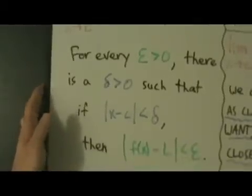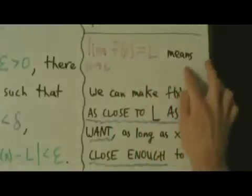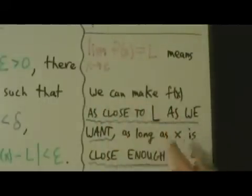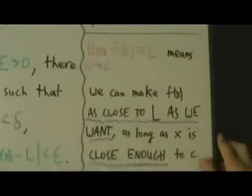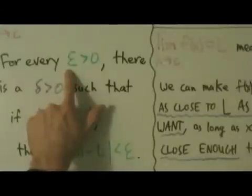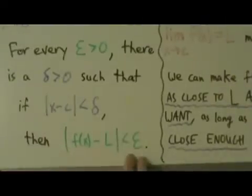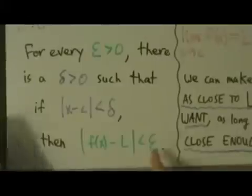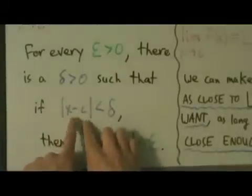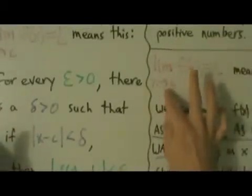So what does this definition kind of mean? Let's think about this a slightly different way. When we say limit as x approaches c of f of x equals L, that kind of means that we can make f of x as close to L as we want, as long as x is close enough to c. So let's say here's an epsilon — some teeny tiny positive number. We want to make the distance between f of x and L less than epsilon, and we can do that as long as we make the distance between x and c less than delta. If all that works out, then we say this limit as x approaches c of f of x equals L.